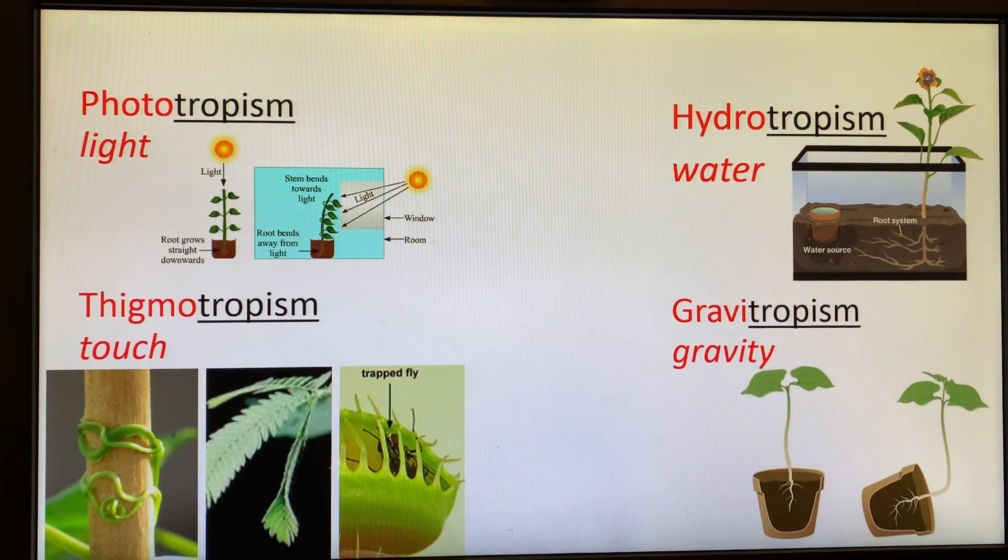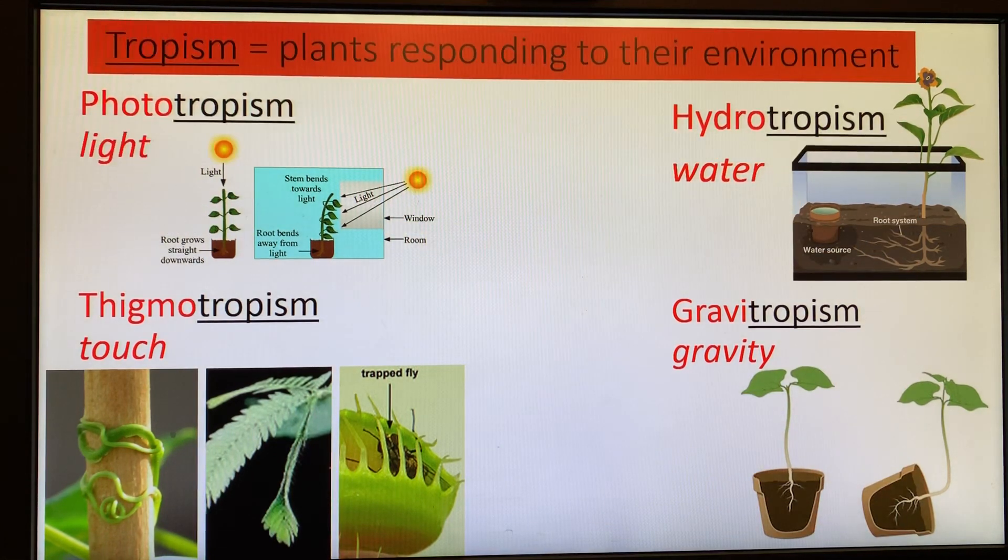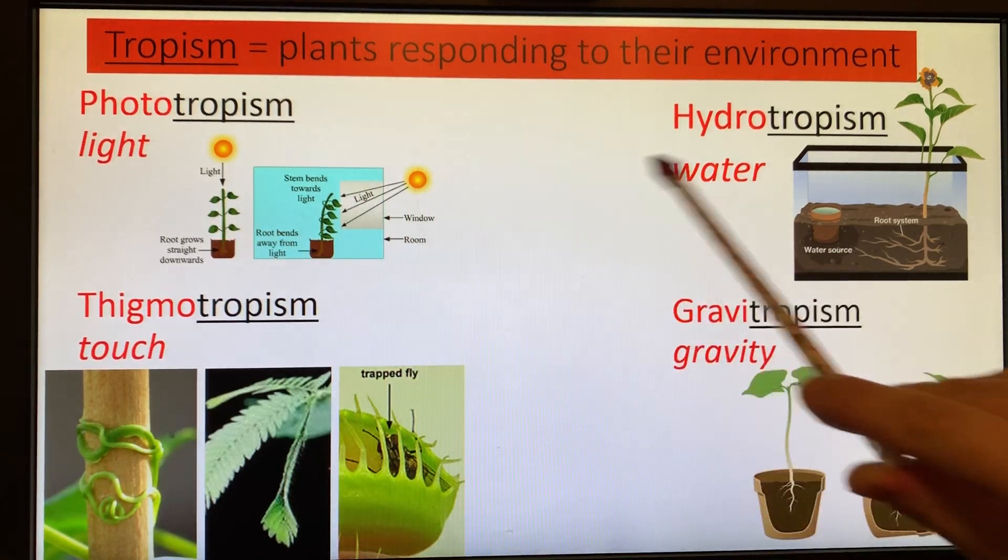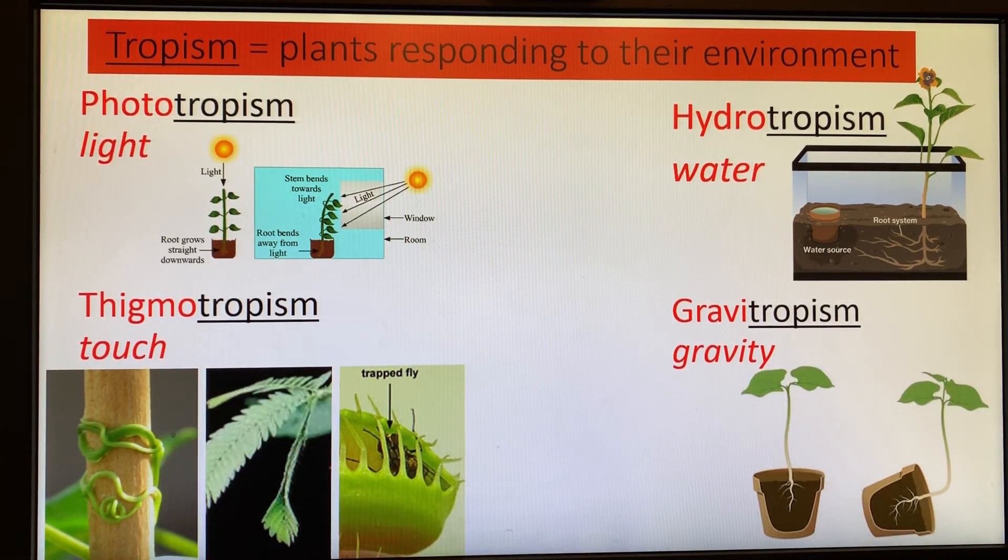Those are our four tropisms. Remember, tropisms, we are talking about plants responding to their environment. Phototropism, hydrotropism, thigmotropism, and gravitropism.